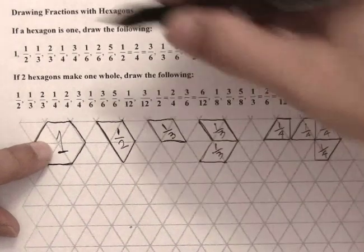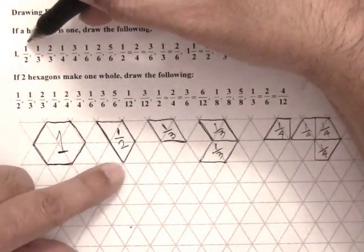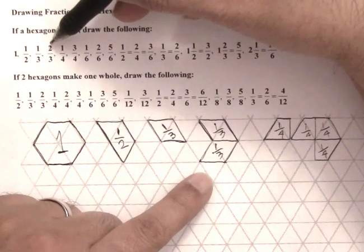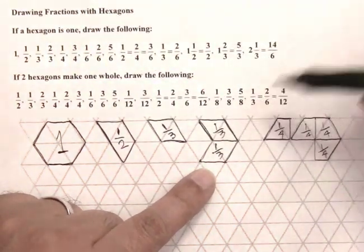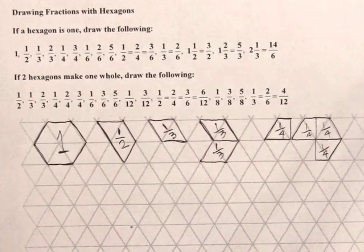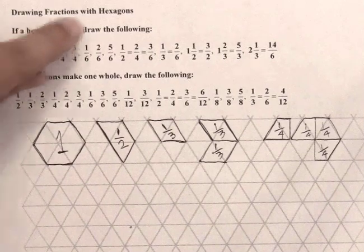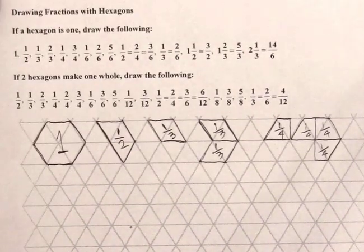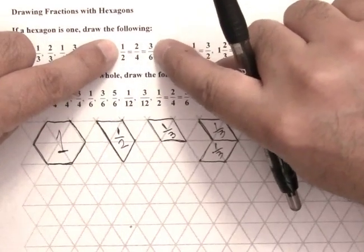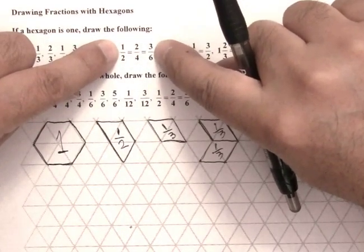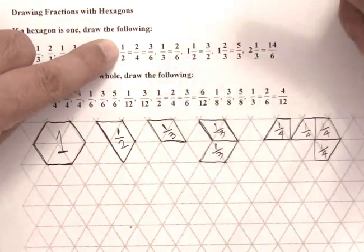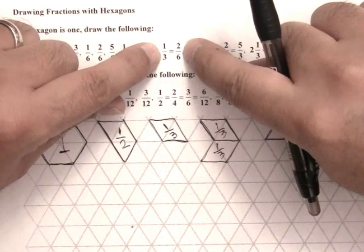So we have one, one half, one third, two thirds, one fourth, and three fourths — three quarters. We can keep drawing these things. After a while we're asked to draw some equivalences: half is the same as two fourths, is the same as three sixths.